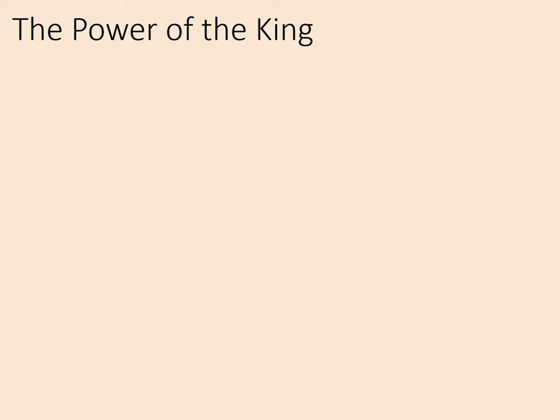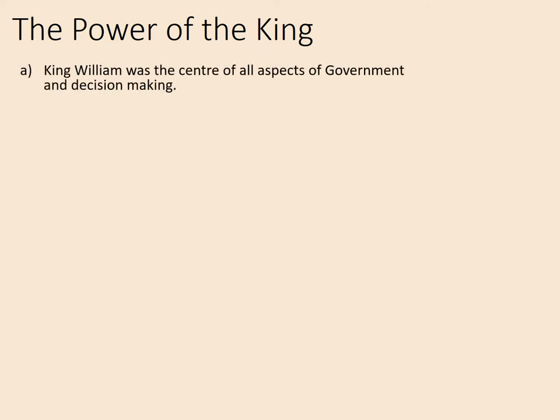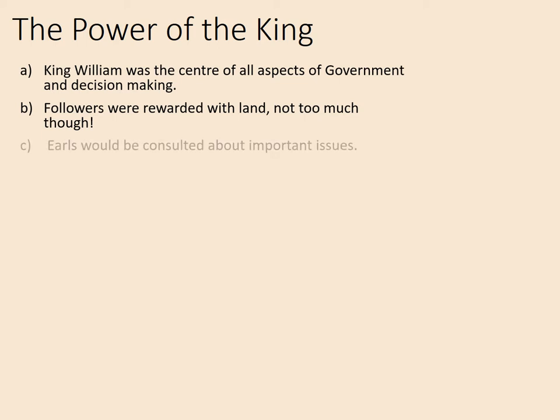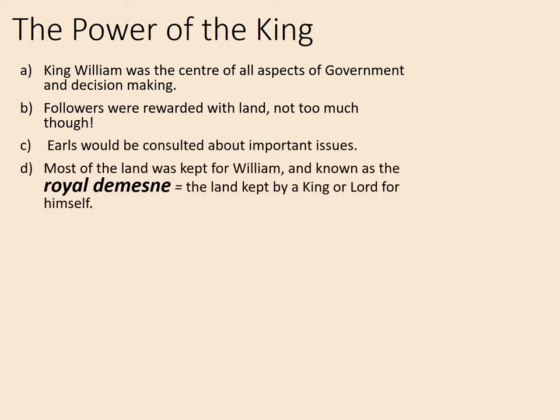First of all, let's consider the power of the king. King William was at the centre of all aspects of government and decision making. Followers were rewarded with land, but not too much, as otherwise they might become too powerful. This was different to the system under the Anglo-Saxon kings, where the most loyal followers were given an awful lot of land and frequently did become challenges to the king. Earls would be consulted about important issues, and most of the land was kept for William himself. This was known as the royal domain — the land being kept by king or lord for himself.